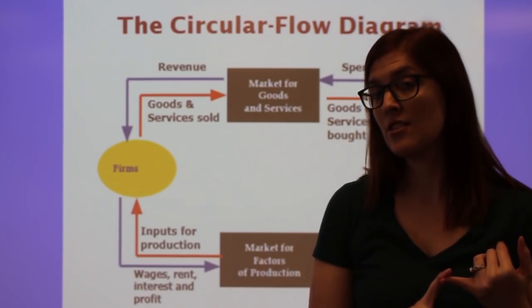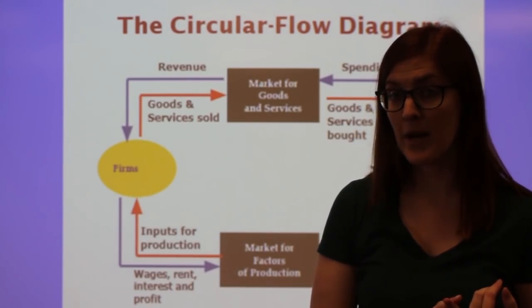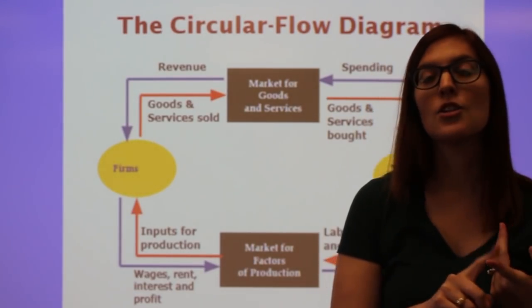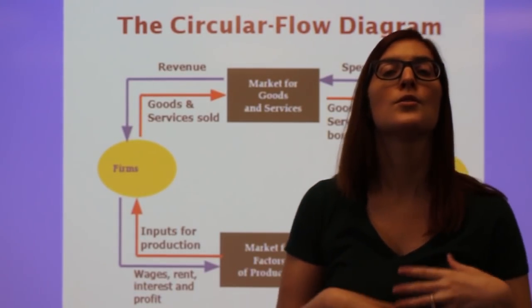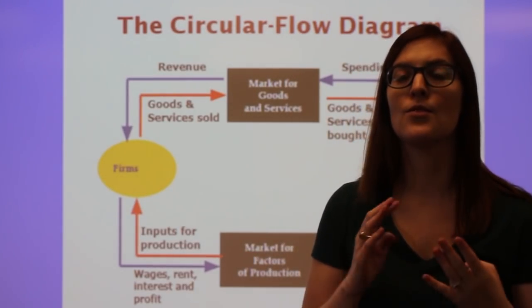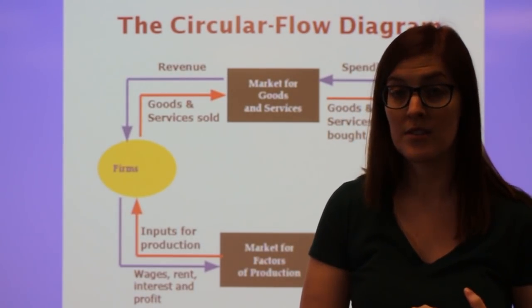And here are the four types of incomes that you can earn for selling your resources. Labor collects wages, land collects rent, capital collects interest, and entrepreneurs collect profit. So RIP is a good way to keep in mind those four resource payments for the resources that we are selling.